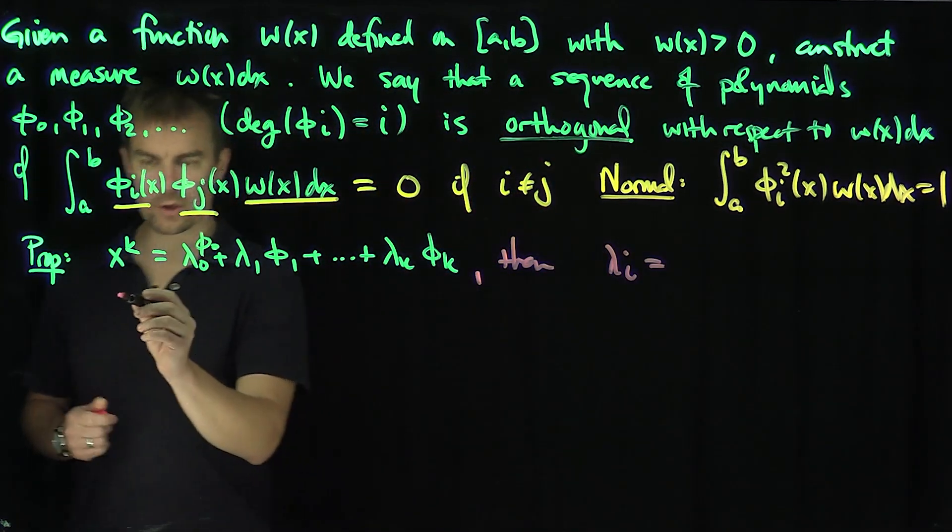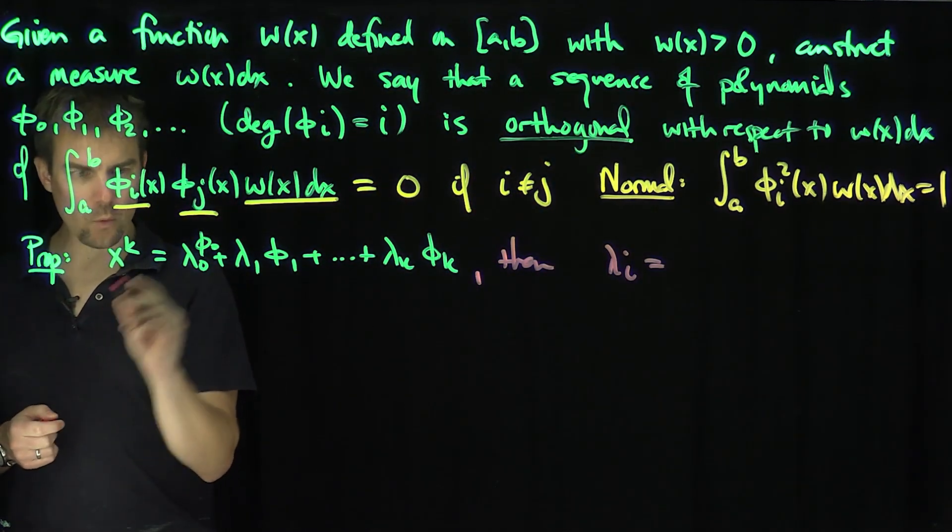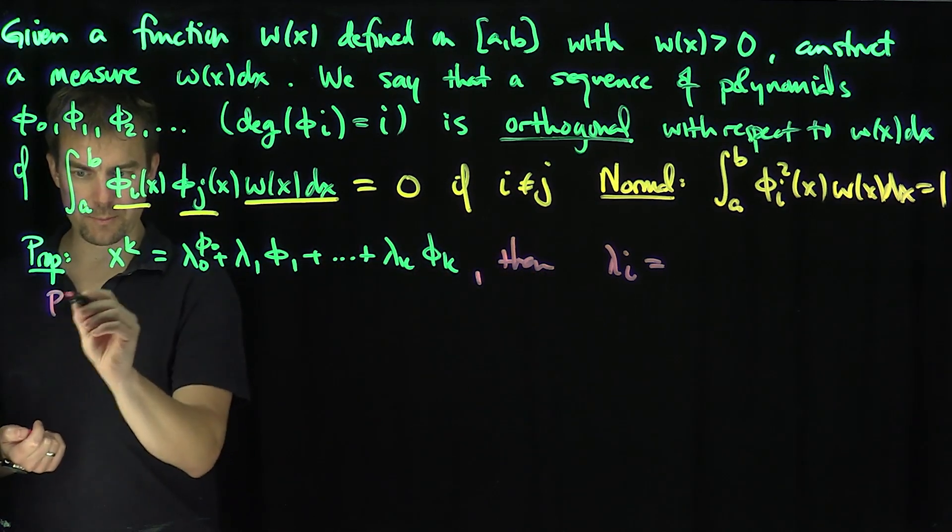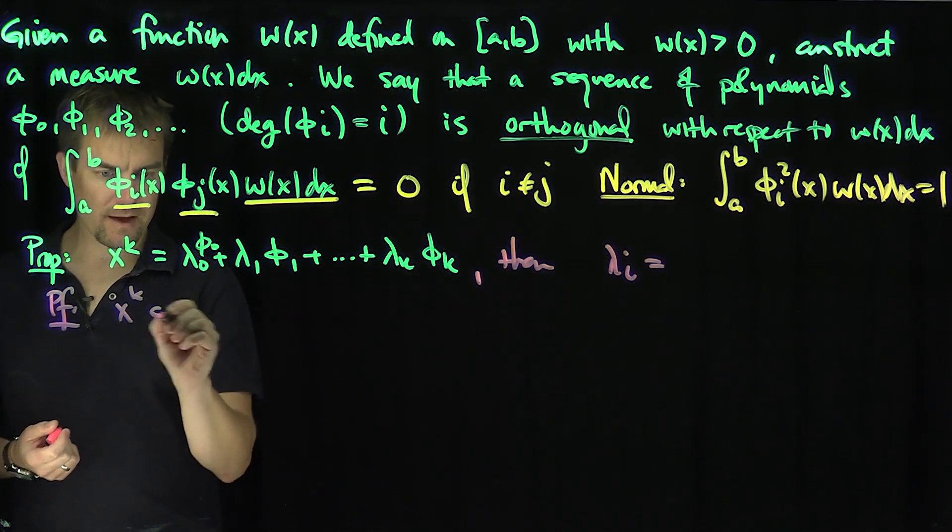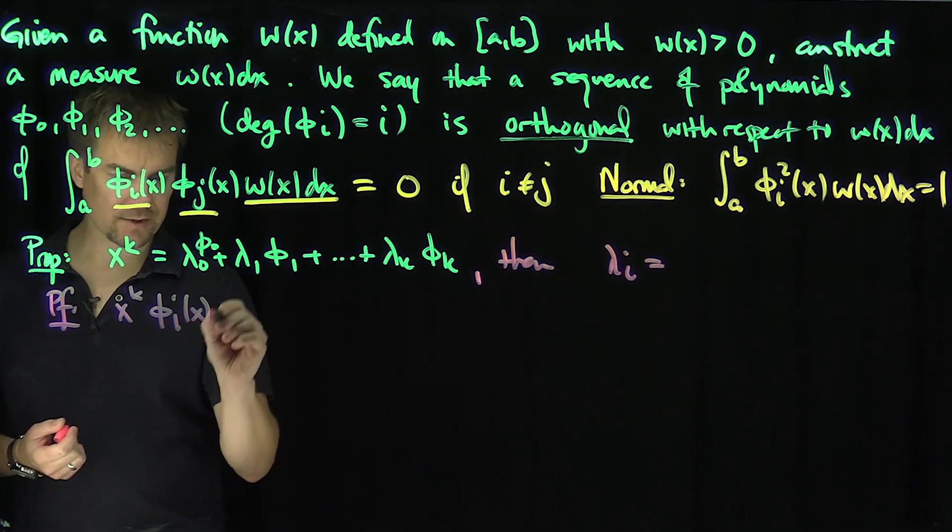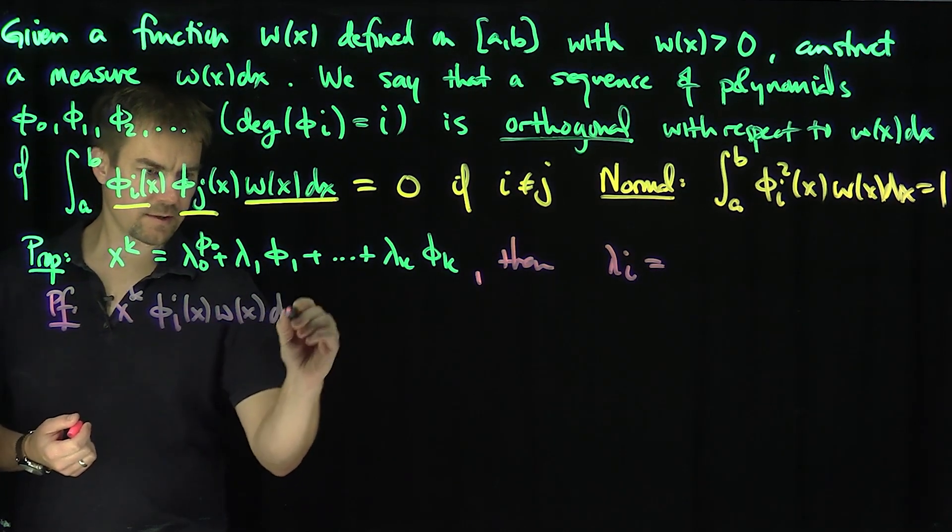λᵢ is equal to what? Well, what we'll do is we'll take x^k, we'll figure out what the formula is, but let me just prove it. So here's the proof. I'm going to do x^k times φᵢ(x)w(x)dx.